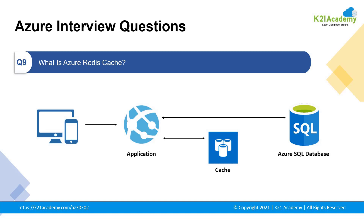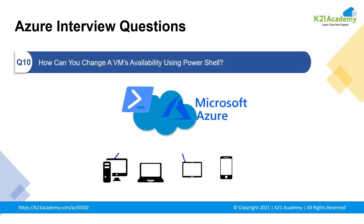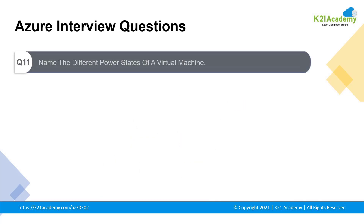It can improve application throughput and latency, and speed up applications with distributed caches. Moving on: how do you change virtual machine availability using Azure PowerShell? You can create a new availability set if it does not exist, remove the original VM, or create the basic configuration for replacement of a VM.